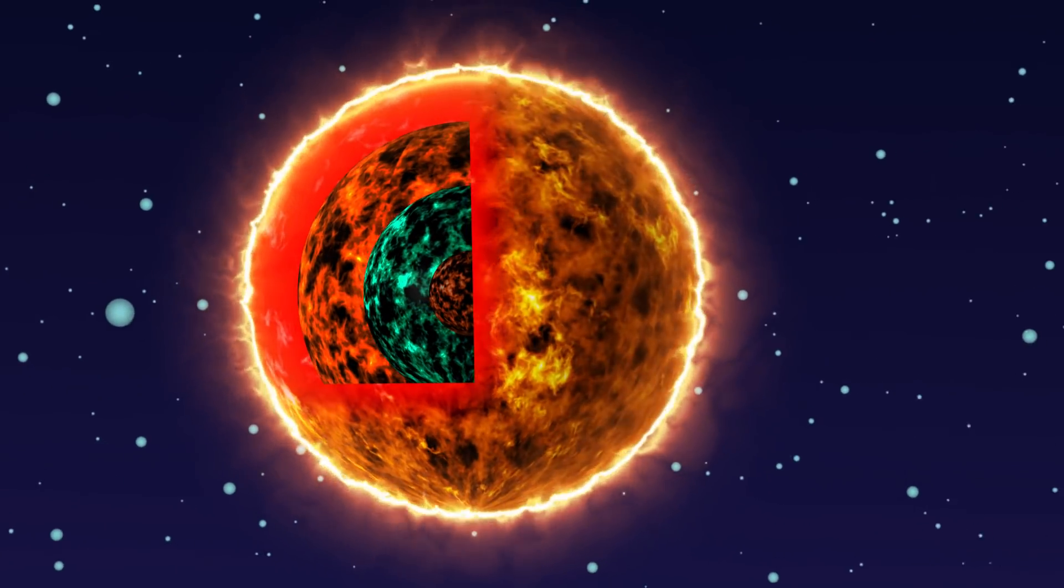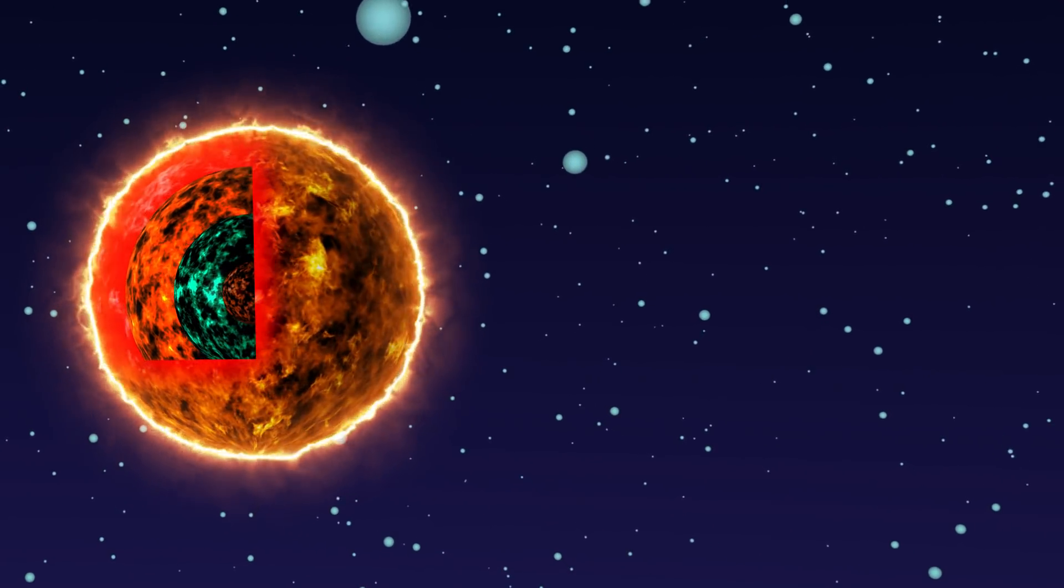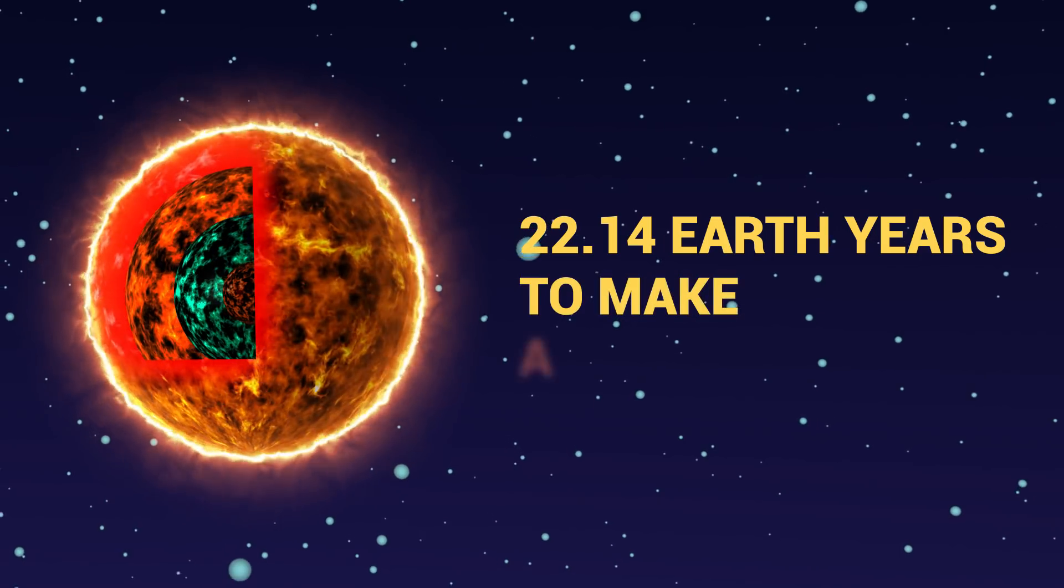The inside of the sun is rotating at an even slower rate than the poles. So, if you somehow managed to work your way into the core of the sun, it would take you 22.14 Earth years to make a full rotation. That's a pretty huge difference.